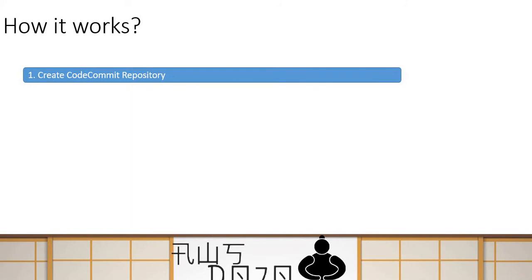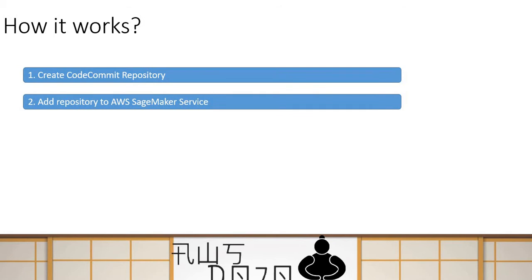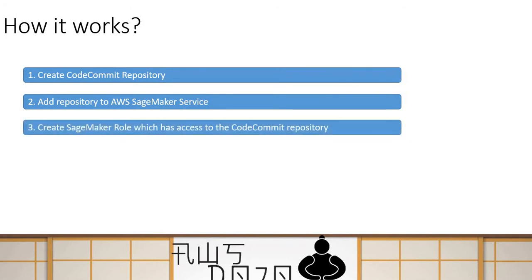First, you create a CodeCommit repository. Once you have created the repository, you go to the SageMaker service and add this repository. You can add more than one repository to your SageMaker service so that SageMaker notebooks can work on one or more repositories as needed.